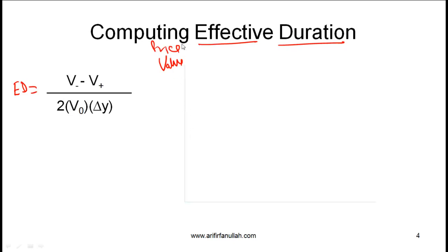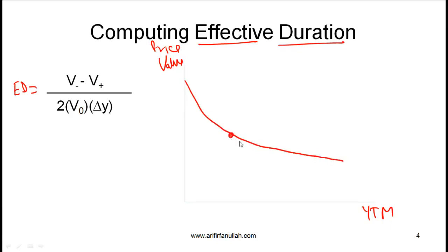Let's say we are looking at the price or value on the y-axis — sometimes it's called the price axis, sometimes the value axis — and the x-axis represents various yields to maturity. We are plotting the price-yield curve. For a given curve, assume that when we start, the yield is 8% and at a yield of 8% the bond is at par value of 100.